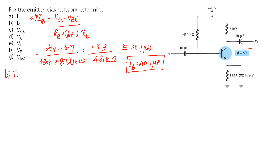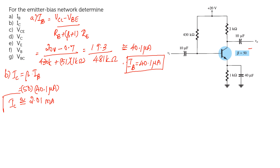Once IB is known, IC = β·IB = 50 × 40.1 µA ≈ 2.01 mA. Therefore IC = 2.01 mA.